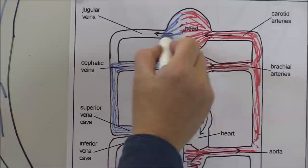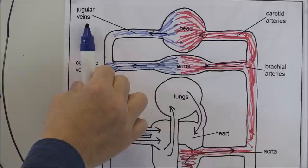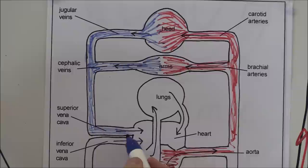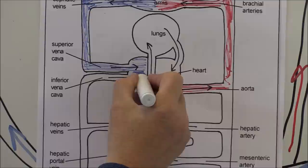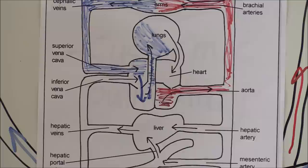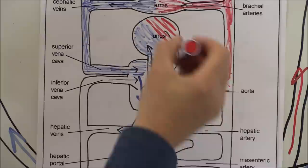As that blood goes through the tissues it's going to become somewhat deoxygenated and darker red. Two of the large veins in the neck are called the jugular veins. They're going to bring the blood back down to the superior vena cava and back to the right atrium. From the right atrium the blood goes through to the right ventricle and from there to the lungs. As the blood arrives in the lungs it's going to be dark red and deoxygenated, but then as it goes through the lungs it's going to become oxygenated and bright red again.